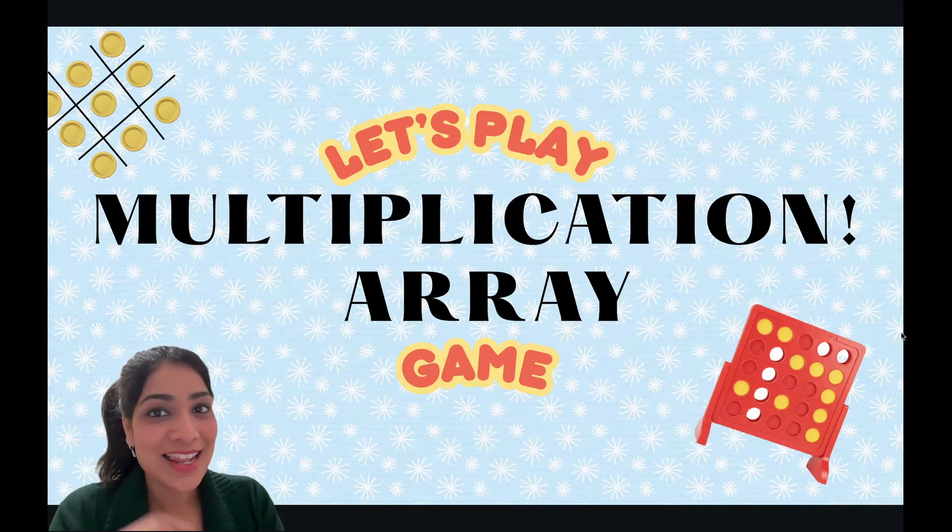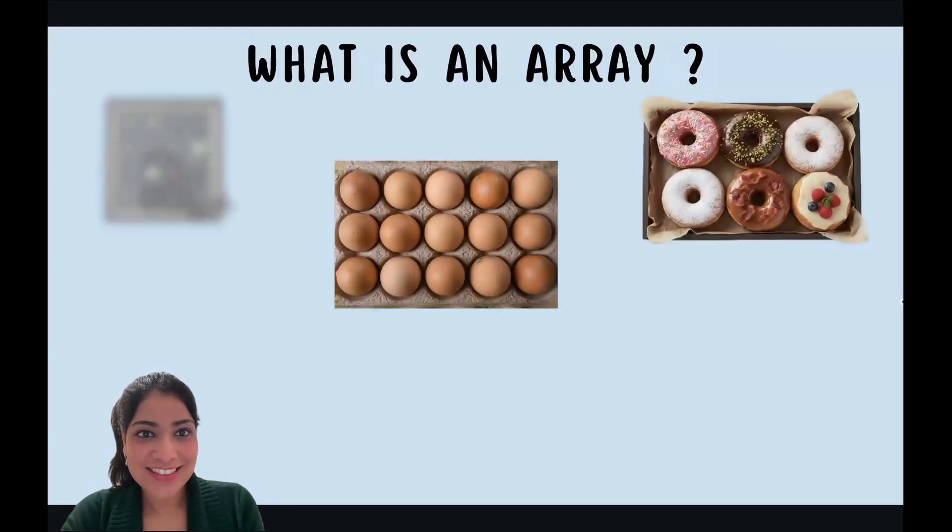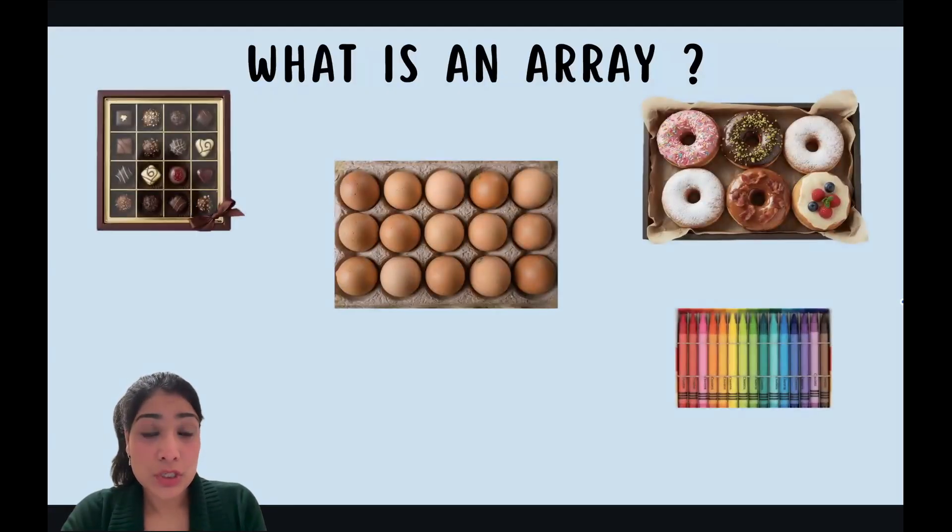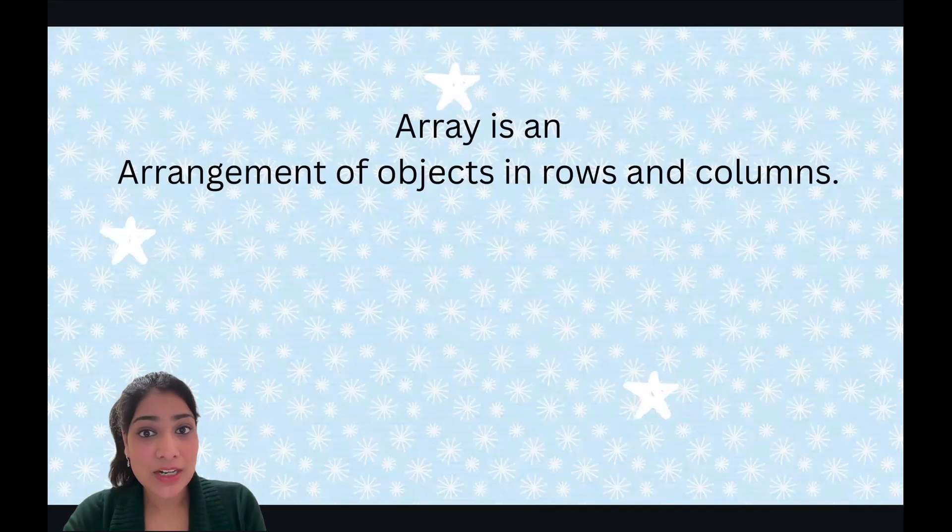But what is an array? Have you seen something like this? Do you see anything common in them? Well, they have been arranged neatly in rows and columns. That's exactly what an array is. An array is an arrangement of objects in rows and columns.